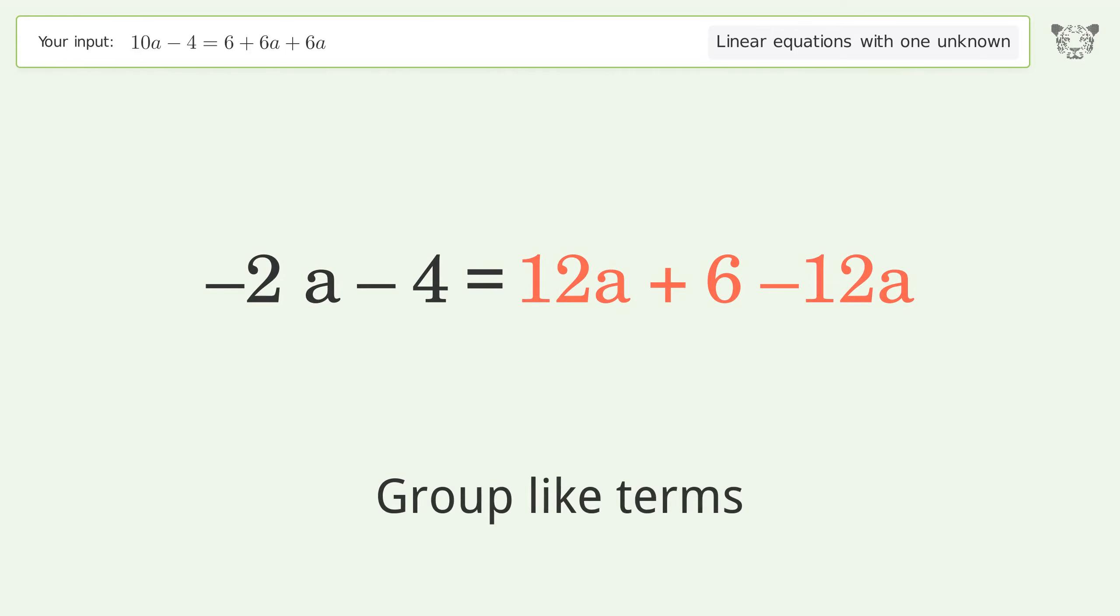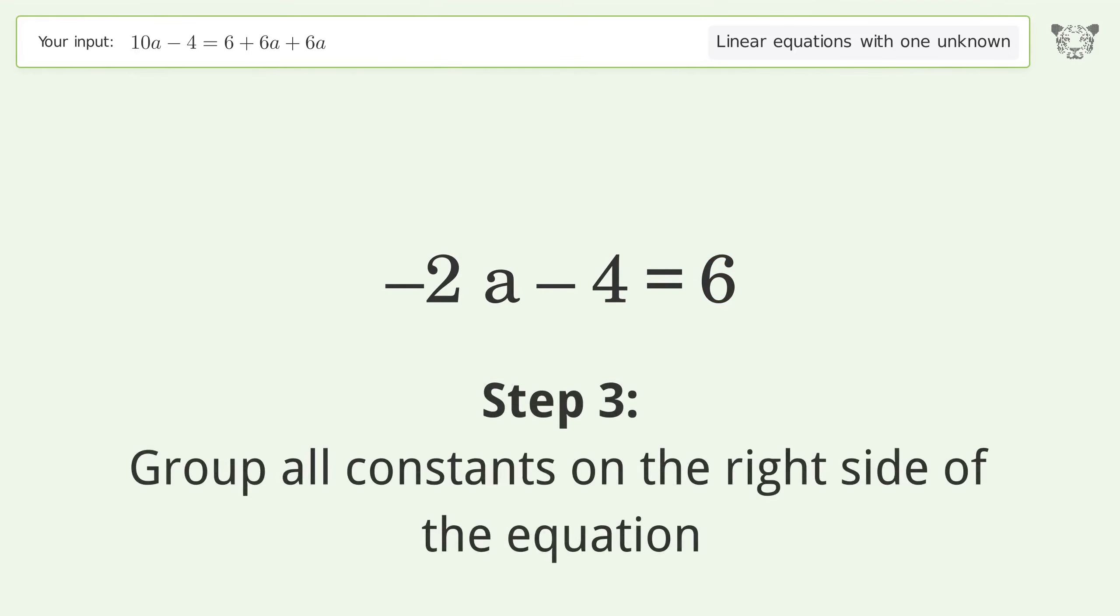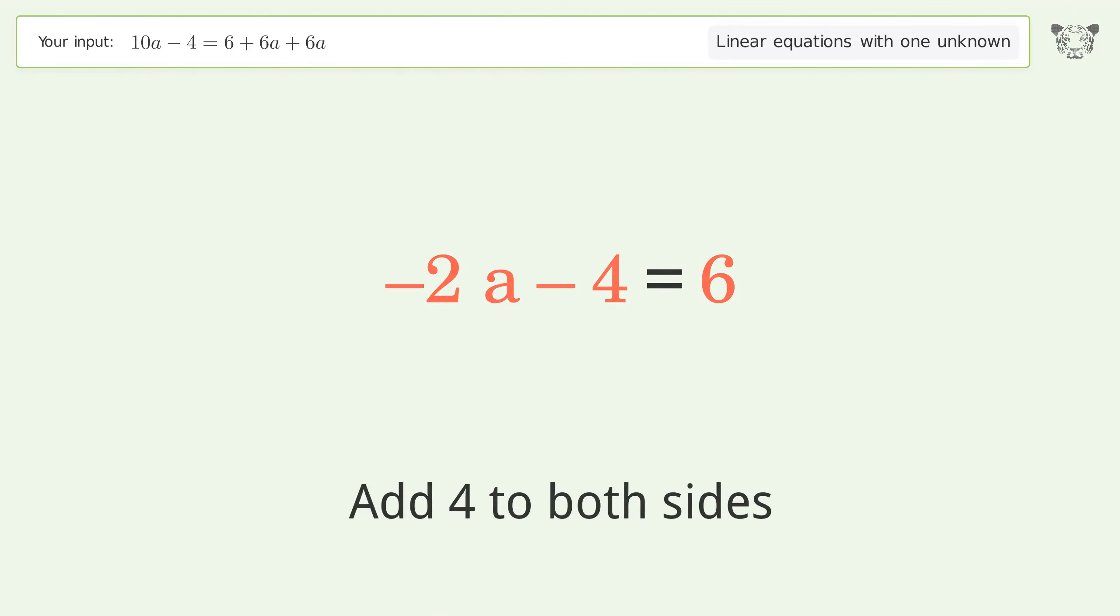Group like terms, simplify the arithmetic. Group all constants on the right side of the equation. Add 4 to both sides. Simplify the arithmetic.